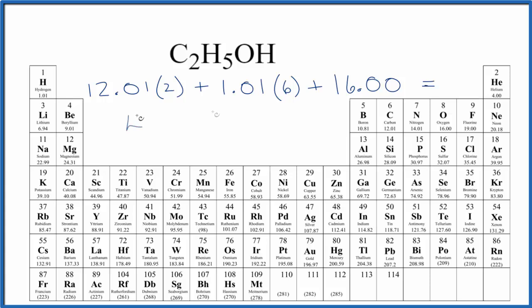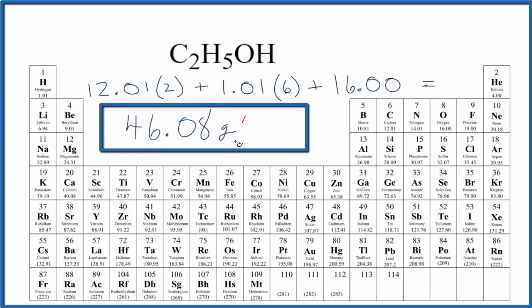And that is 46.08 grams per mole. That means that if we had 46.08 grams of ethanol, that would be one mole of ethanol.